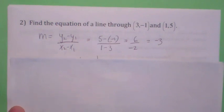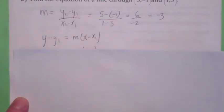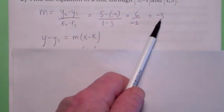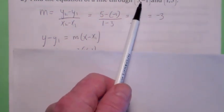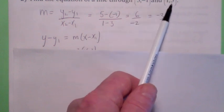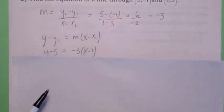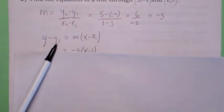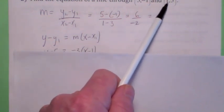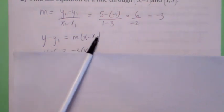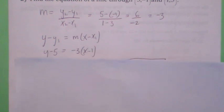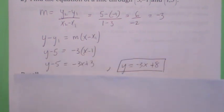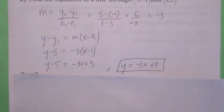We're not done yet. To find the equation now — this is our slope — which point should we use in the point-slope formula? The answer is either one. I'm going to plug 5 in for y1, 1 in for x1, and negative 3 in for m. Then when you simplify and solve for y, I get y equals negative 3x plus 8.